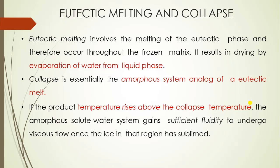Every one degree increase in temperature results in about 13 percent increase in sublimation rate. Eutectic melting involves melting of the eutectic phase throughout the frozen matrix, resulting in drying by evaporation from the liquid phase. If product temperature rises above the collapse temperature, the amorphous solute-water system gains sufficient fluidity and undergoes viscous flow once the ice in that region has been sublimed. To prevent collapse, solutes may be added which have a tendency to crystallize, increasing the collapse temperature so sublimation can be performed at higher temperature. Annealing or thermal treatment is also done to convert the metastable state to the crystalline state.